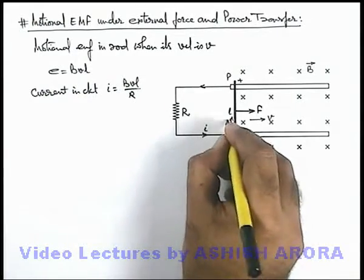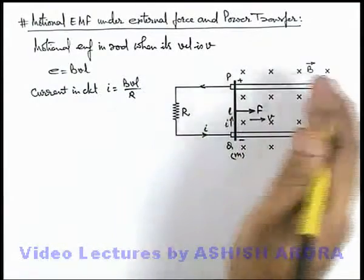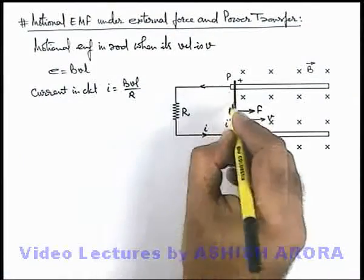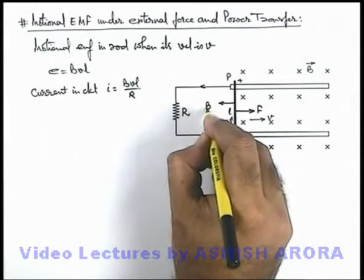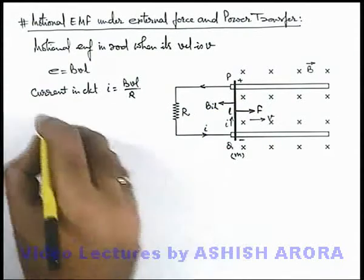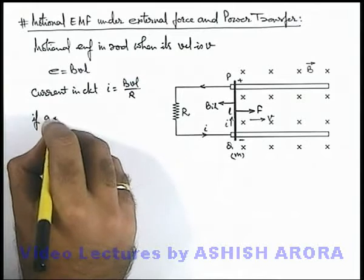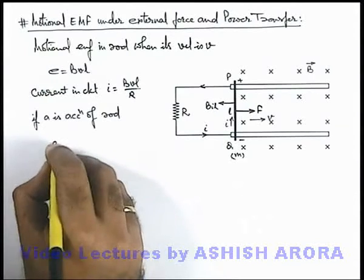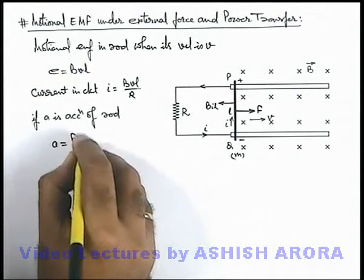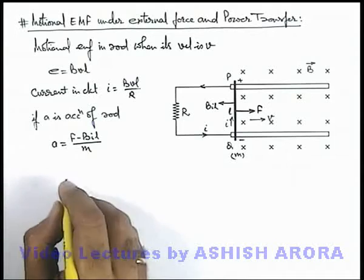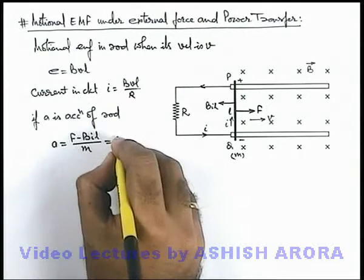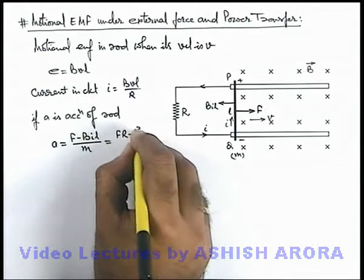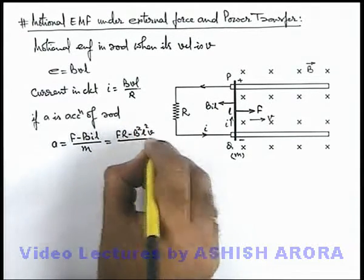This will also be the current in the rod. As the rod is moving, this current will lead to a magnetic force on the rod in the leftward direction, equal to BIL. So if a is the acceleration of the rod, we can write the acceleration as F minus BIL over m. Substituting the value of current as BvL/R, this becomes FR minus B squared L squared v, all over mR.